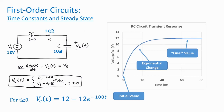So this is a way to visualize any first-order circuit transient response. Voltages or currents start off at an initial value right after some sudden change of the circuit. Then there's an exponential change, and eventually, given enough time, the voltages and currents reach a final, steady value.